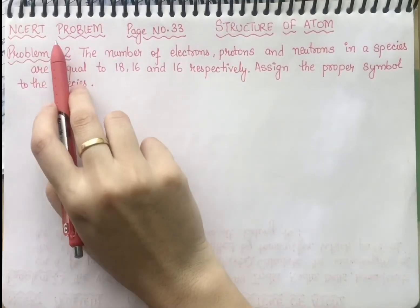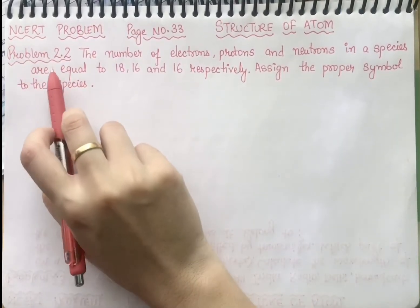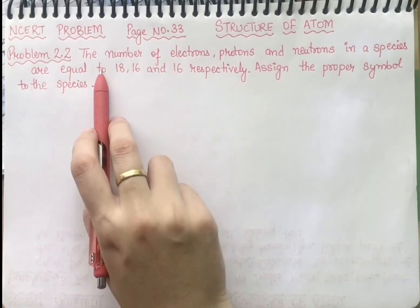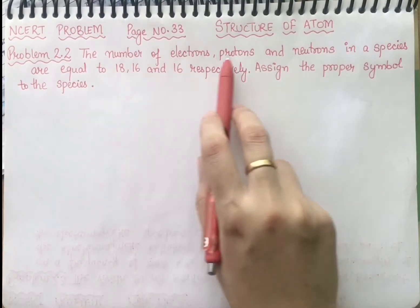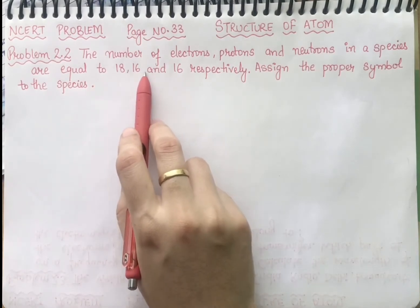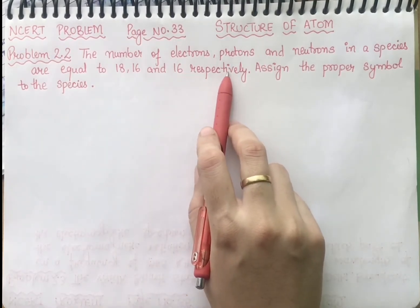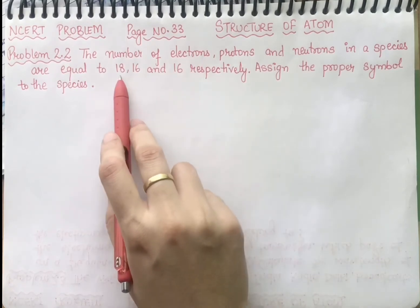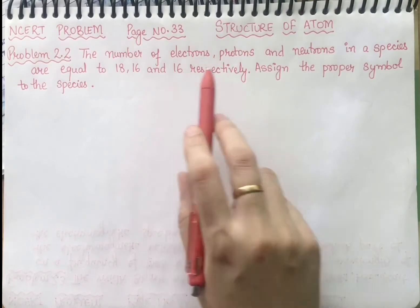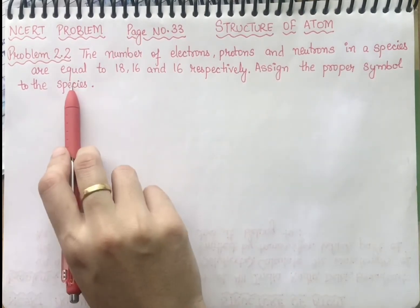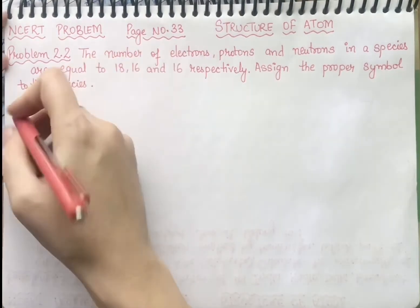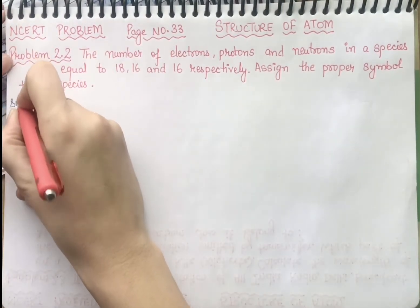Students, this is NCERT problem 2.2 from page number 33 of Structure of Atom. In this statement, they have given you the number of electrons, protons, and neutrons in a species are equal to 18, 16, and 16 respectively. They are saying: assign the proper symbol to the species.